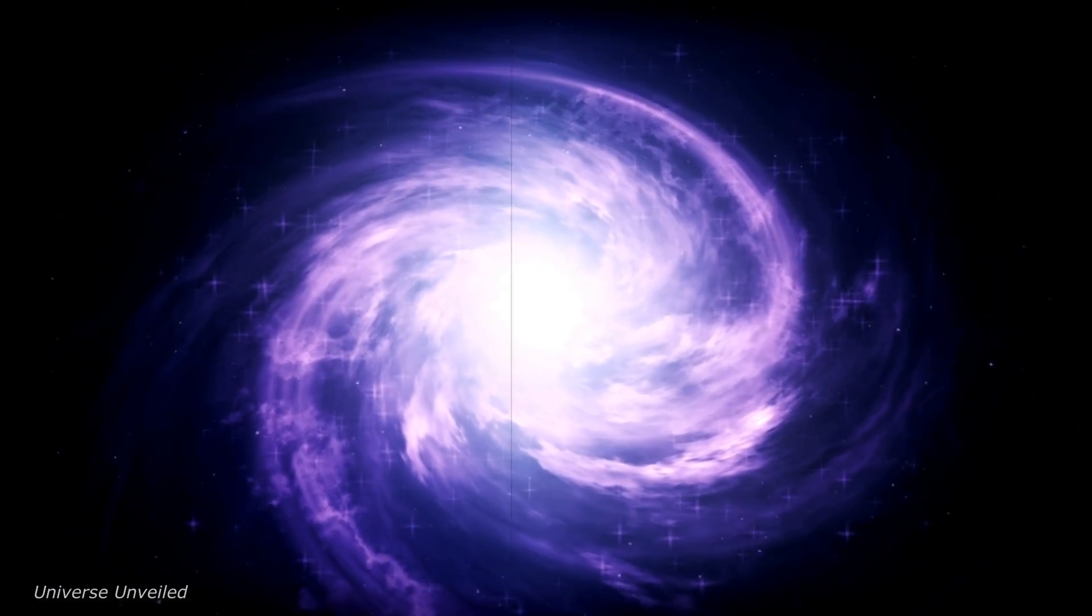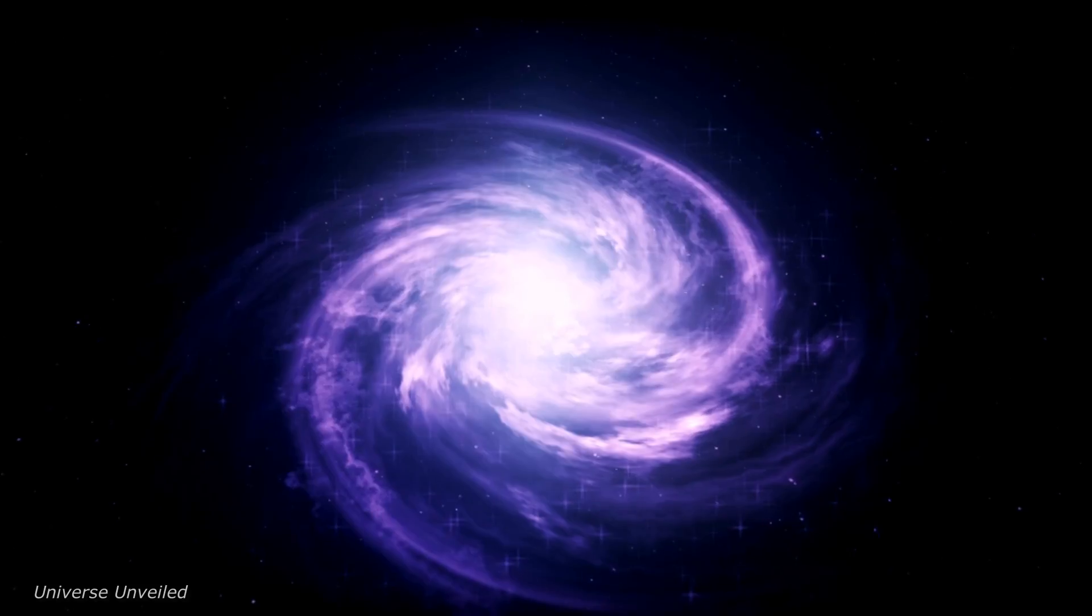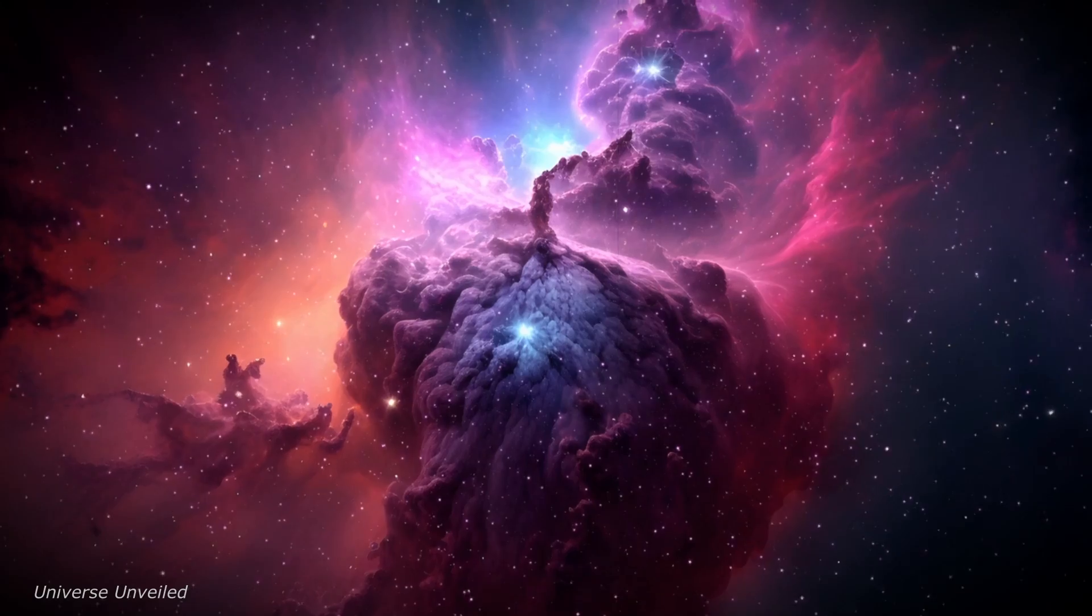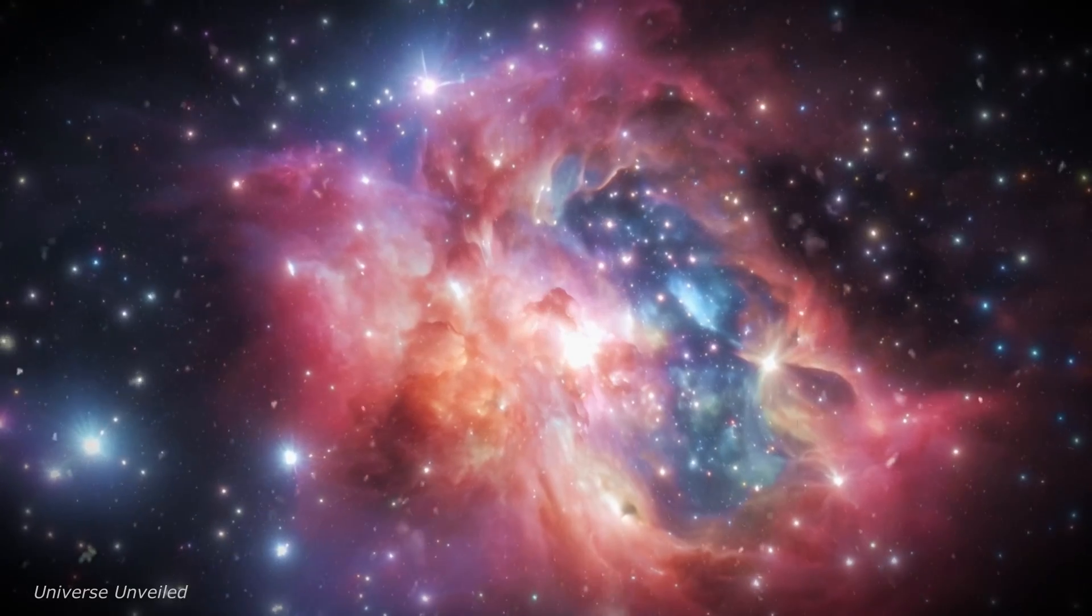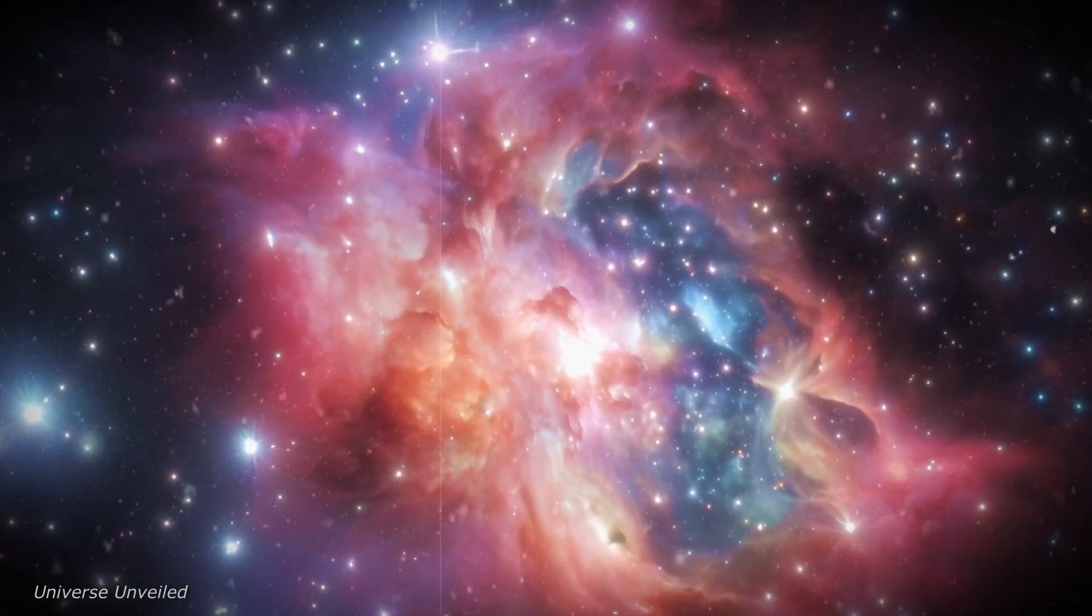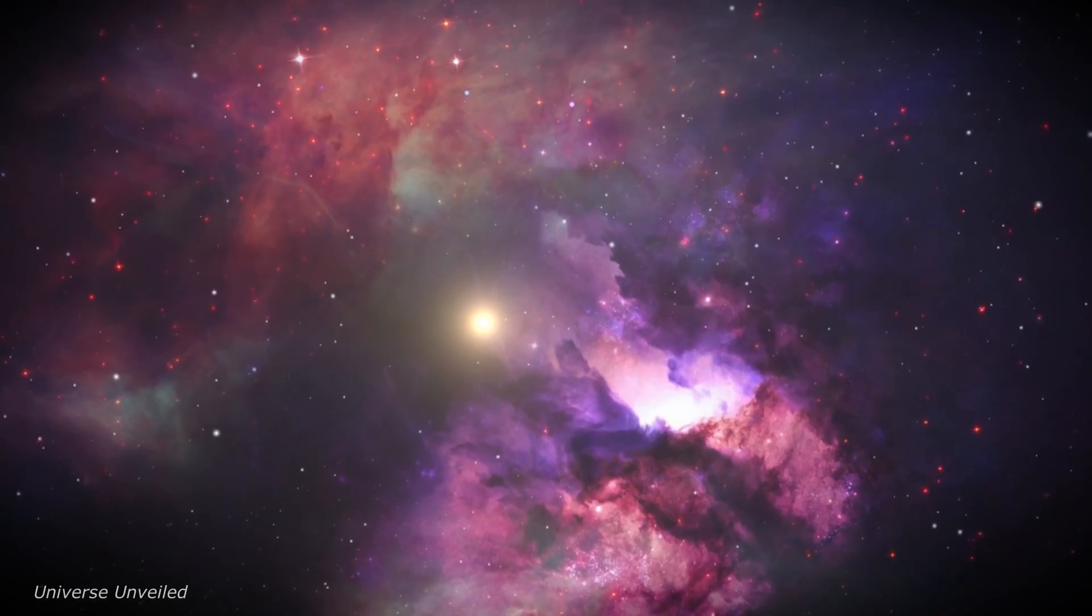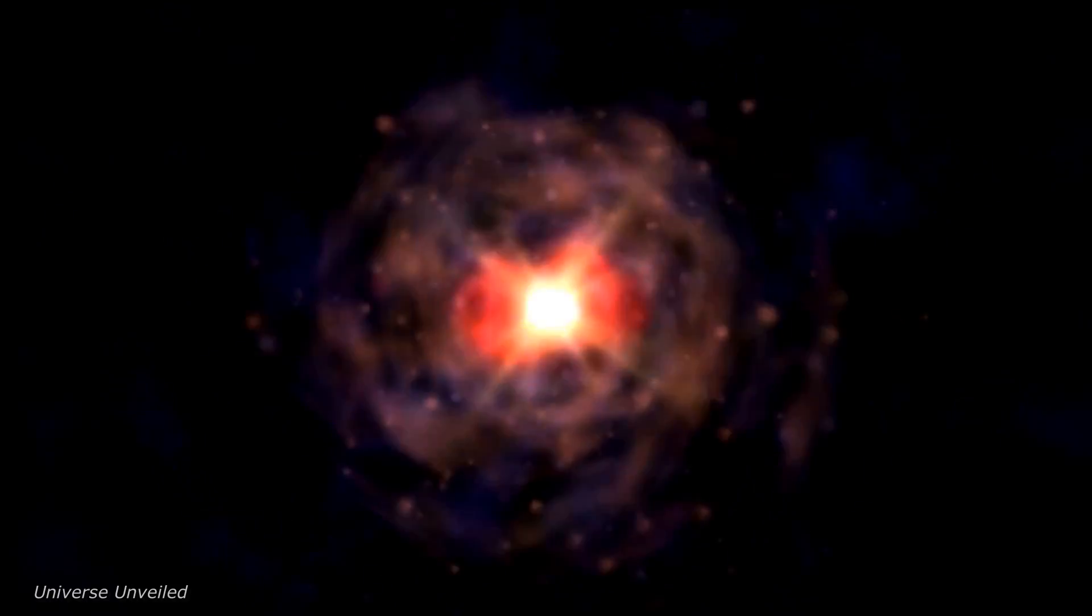The sun is not a static object. It's constantly breathing out a stream of charged particles, known as the solar wind. This wind carries with it the sun's magnetic field, extending its influence far beyond the visible surface. It shapes the space environment around us, creating a dynamic and ever-changing cosmic weather system.